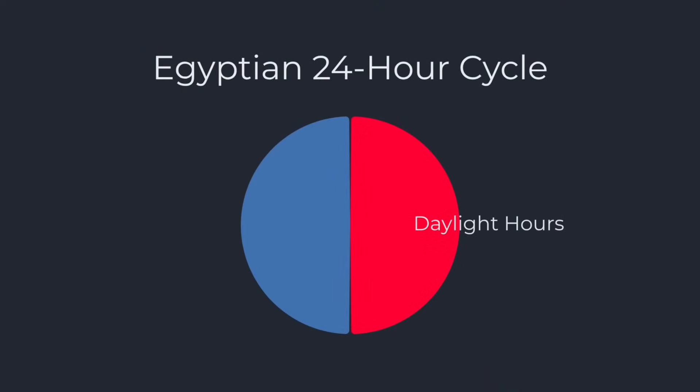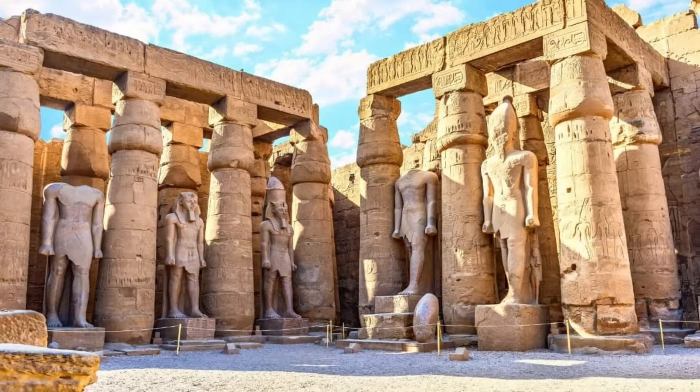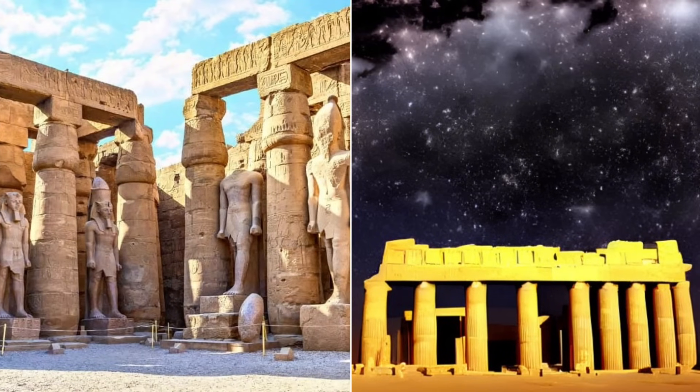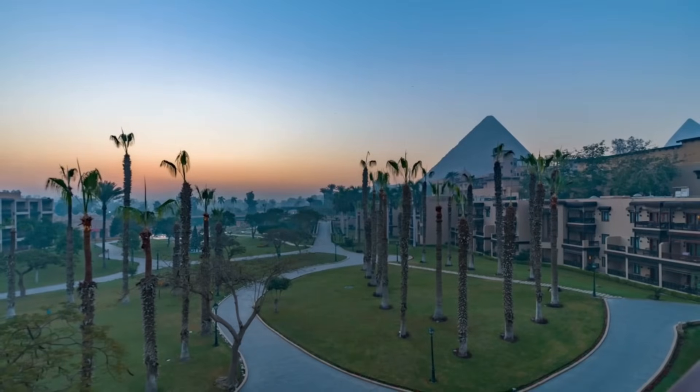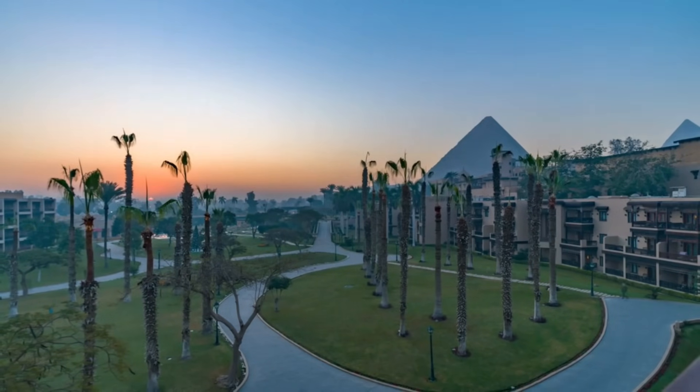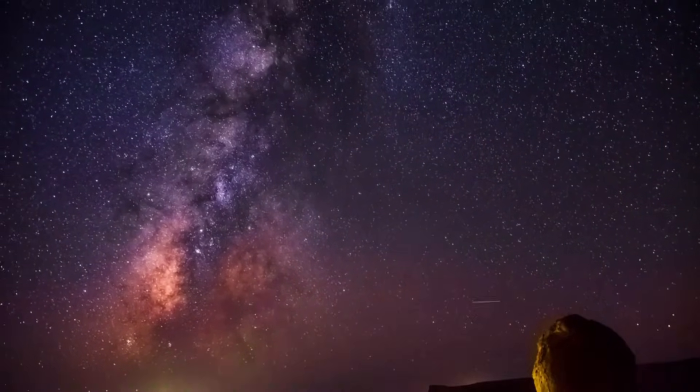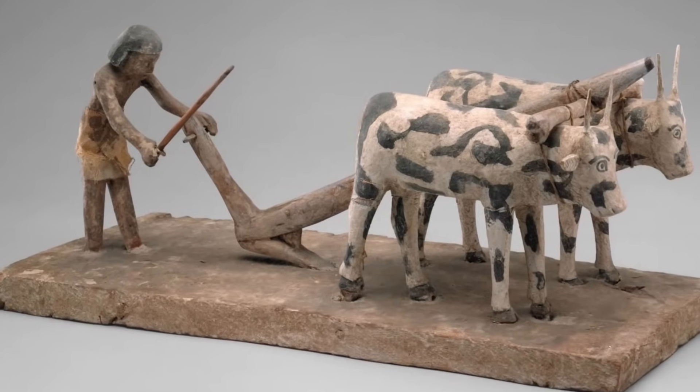But the Egyptians didn't stop at night. They split the day as well, dividing sunlight into 12 parts, each one an hour. Pair those with the 12 hours of darkness, and you get a full cycle of 24. The idea of a 24-hour day with 12 for light and 12 for dark is a direct legacy of Egyptian sky-watching. These hours weren't equal in length. Summer days stretched the daylight hours, winter nights did the same for darkness, but the structure held.